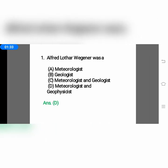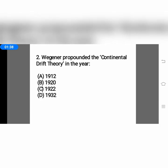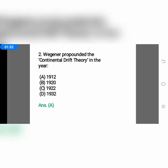The next question: Wegener propounded the continental drift theory in the year — option A, 1912; option B, 1920; option C, 1922; or option D, 1932. The answer is option A, 1912.